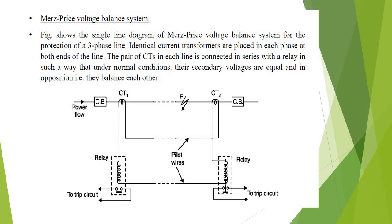Differential protection is a pilot wire protection. This is the single line diagram of the Merz-Price voltage balance system of protection of three-phase lines. Identical current transformers are placed in each phase at both ends of the line. Each pair of CTs is connected in series with the relay. Under normal operating conditions, the secondary voltages are equal and in opposition, balancing each other.